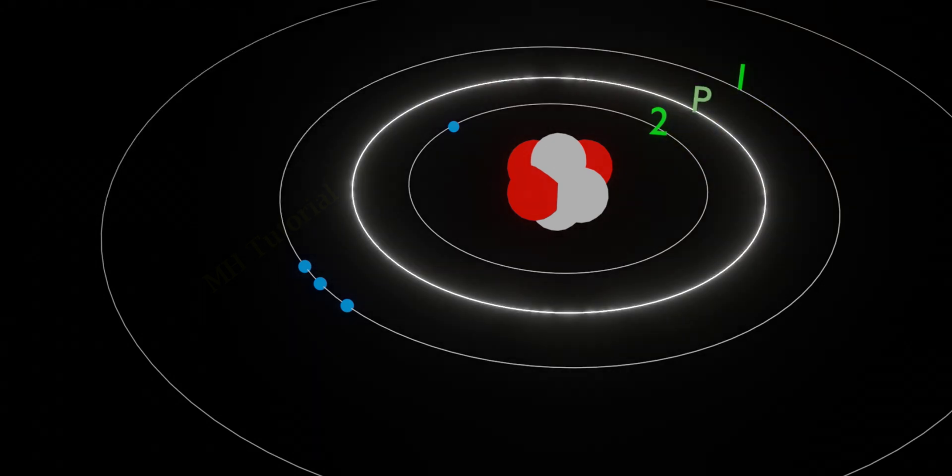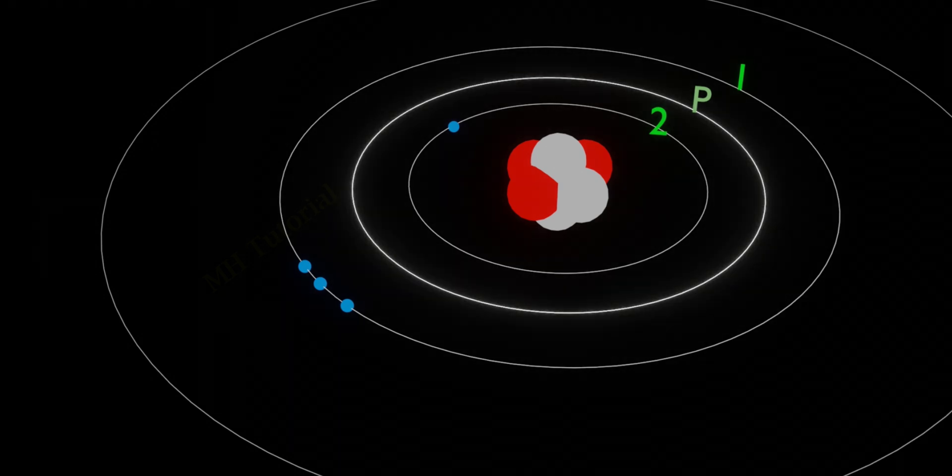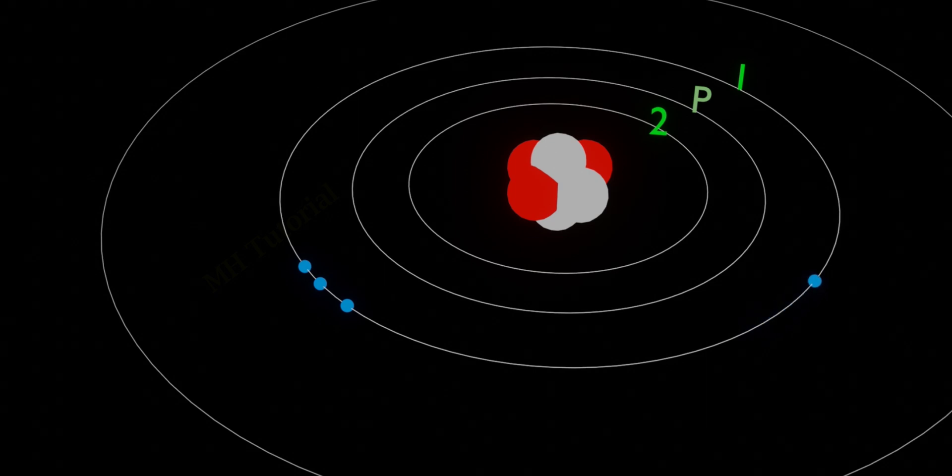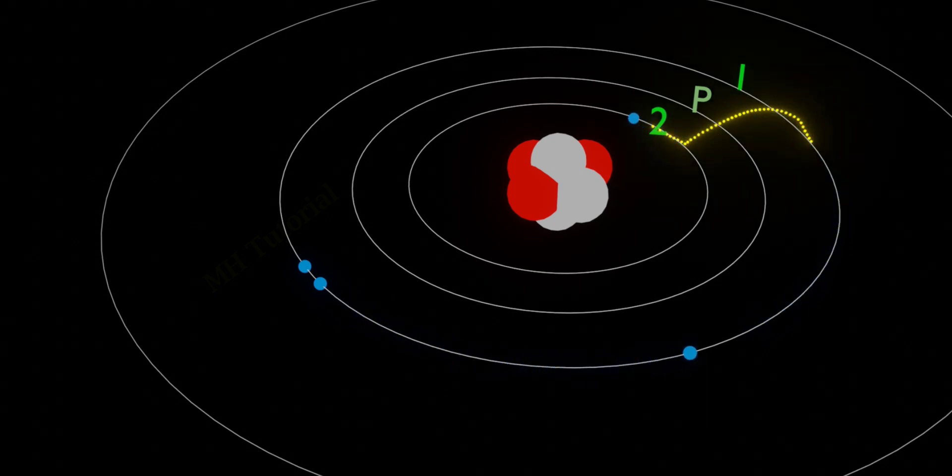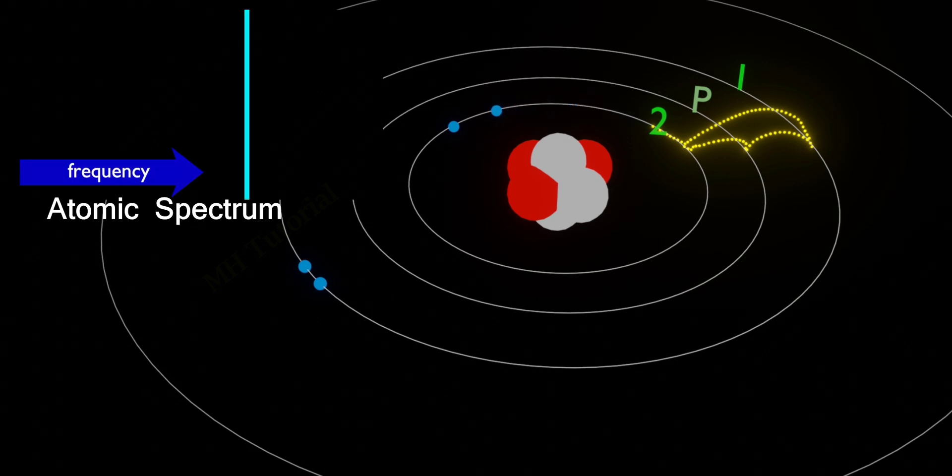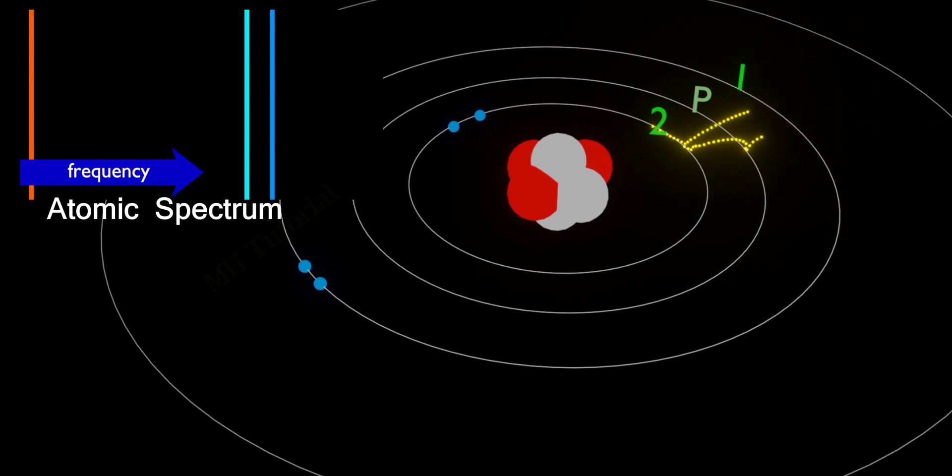If there exists another orbit between them, say orbit p, the electron now gets two different ways to transit. First one is orbit one to orbit two. And the second one is orbit one to orbit p to orbit two. A total of three transitions can be seen there. For all these transitions, three lines of rays are generated.